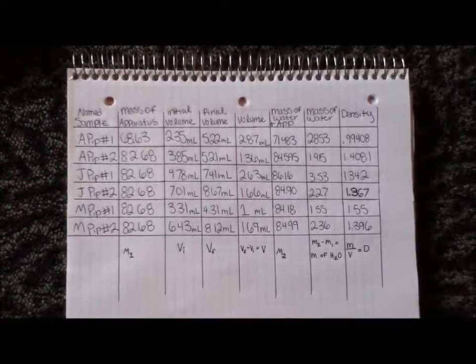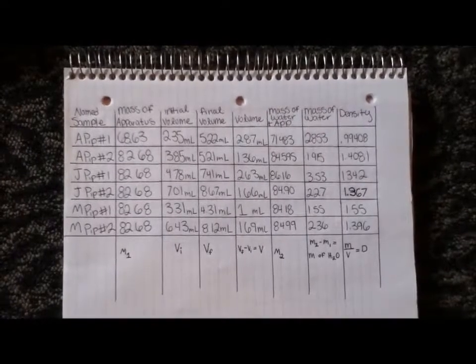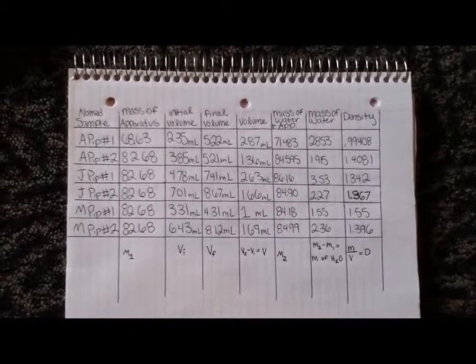The following section represents the mass of the solution in the beaker, followed by the mass of the solution. The last column is the density of the solution, which was found by dividing mass by volume.